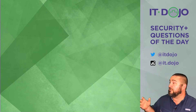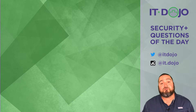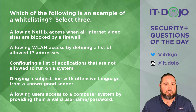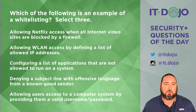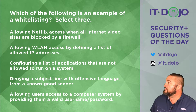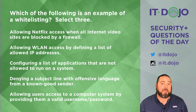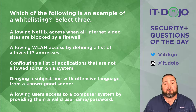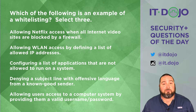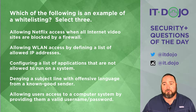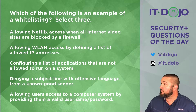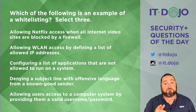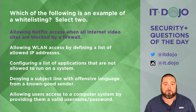Given this enormous list, which of them are examples of whitelisting? Click on pause, think about it, pick three, let me know. The first choice on the list says allowing Netflix access when all other video websites are blocked by the firewall — so you're blocking Hulu and YouTube and things like that, but Netflix is allowed. That's absolutely whitelisting.